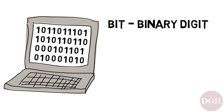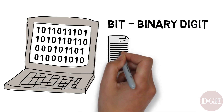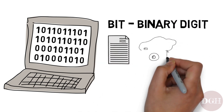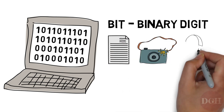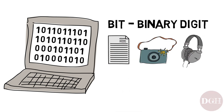Now, these bits — these 1s and 0s — are used to store all kinds of information, from the text that appears on your screen, to the colors of an image, to the sounds that come out of your speakers. To store information like this, we use a bunch of bits together.